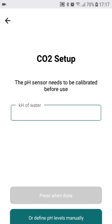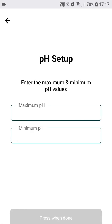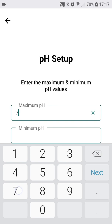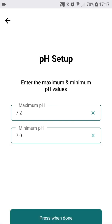The other option is to define the pH levels manually. In this case we enter the desired minimum and maximum pH value in our aquarium. We want to have the pH in the 7.2 and 7.0 pH level, so I enter the maximum amount 7.2 and the minimum amount 7.0. Now we have the CO2 dosing successfully set up.